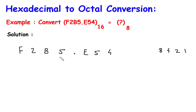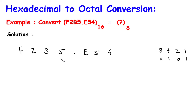Now, here the first digit is 5. 5 means 4 plus 1. So this will be 0, 1, 0, 1. So the binary for 5 is 0101.